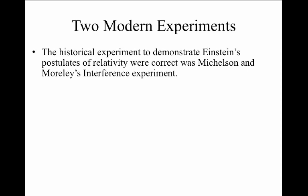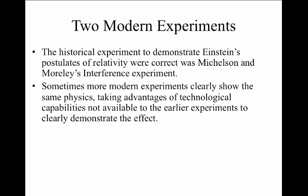Historically, it was Michelson and Morley's interference experiment which showed that Einstein's postulates of relativity were correct. But the more modern experiments will take advantage of some technological capabilities that were not available to Michelson and Morley, and it will be a little bit easier to see why some of Einstein's new postulates were better than the original postulates upon which mechanics was based.